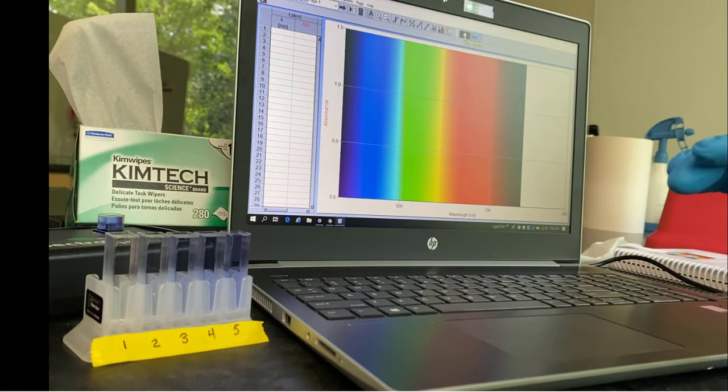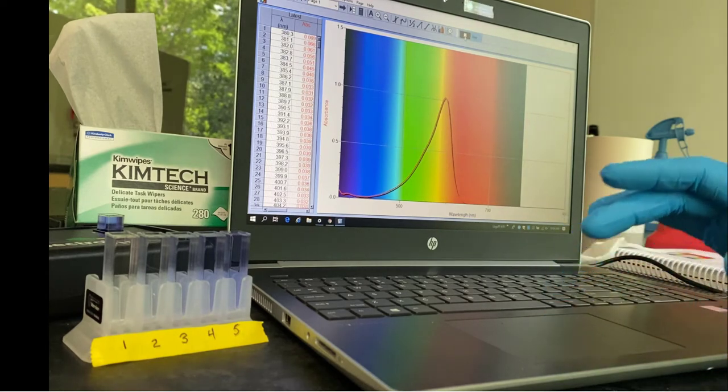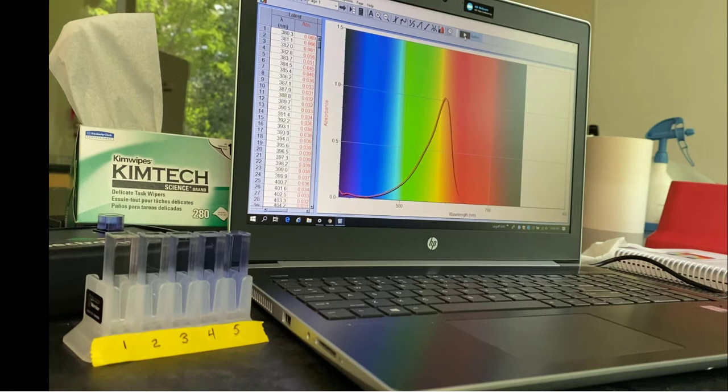Now I'm going to tell the computer to collect data and it's going to generate an absorption spectrum for bromophenol blue. So you can see it's absorbing mostly there, the peak is in the yellow and the orange.